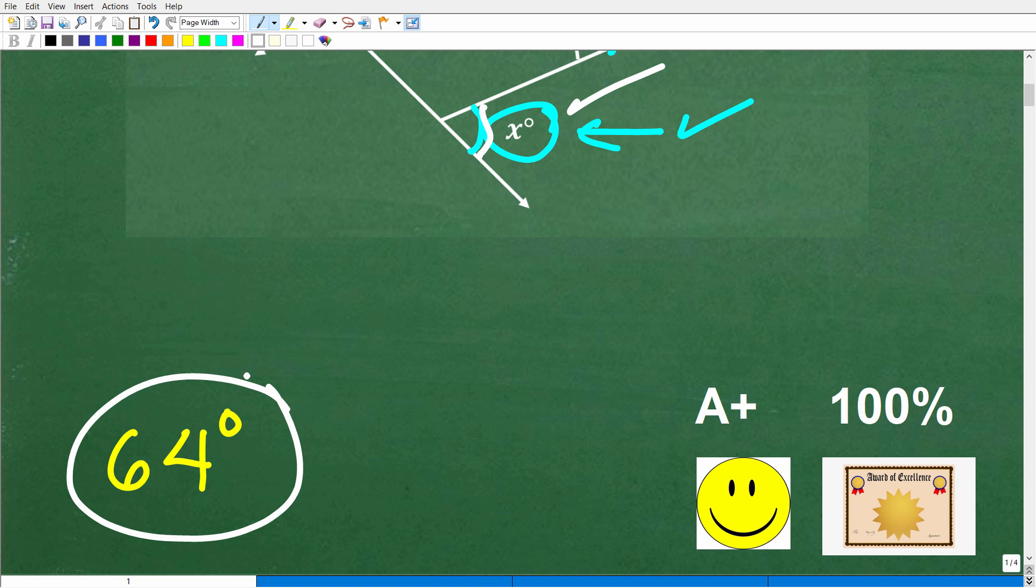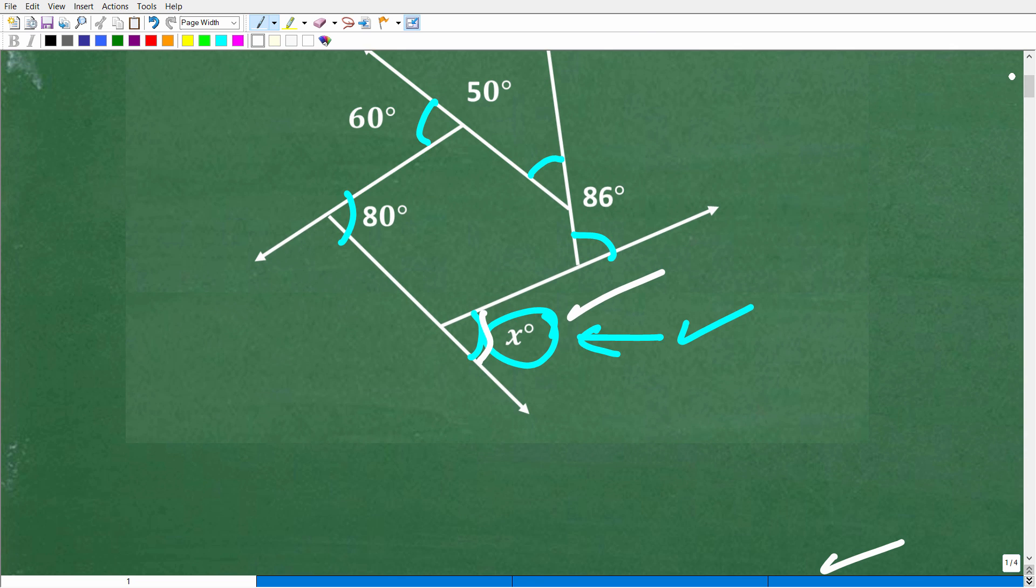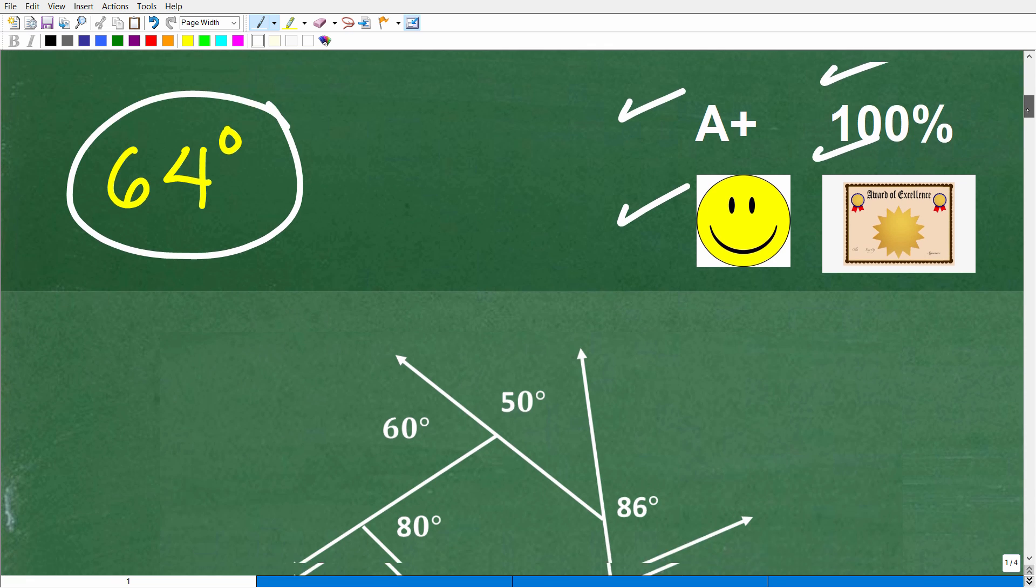All right, now, if you got this right, well, you definitely get a happy face and a plus, a 100% and a Certificate of Excellence for being a certified professional expert in the area of determining the sum of the interior angles of a polygon. All right, now, some of you are like, I don't even know what you're talking about, Mr. YouTube Math Man.